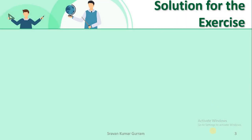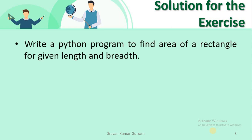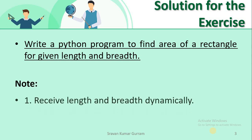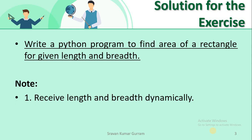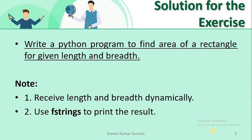In the last lecture, an exercise was given to you. Let us see the solution for that exercise. The exercise is: write a Python program to find the area of a rectangle for a given length and breadth. The rules are: receive length and breadth dynamically, and use f-strings to print the results. By following these rules, you needed to do this exercise.